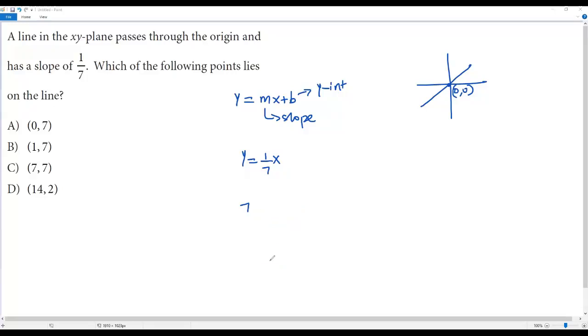Now let's take the point in option C, which is (7, 7). We plug in 7 for y and 7 for x. So 7 = (1/7)(7). The 7s cancel out, giving 7 = 1, which is also a false statement.